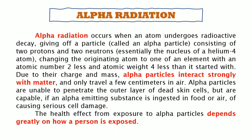What is alpha radiation? Alpha radiation occurs when an atom undergoes radioactive decay, giving off a particle consisting of two protons and two neutrons, changing the originating atom to one of an element with an atomic number 2 less and atomic weight 4 less than it started with. Due to their charge and mass, alpha particles interact strongly with matter and only travel a few centimeters in air. Alpha particles are unable to penetrate the outer layer of dead skin cells, but are capable, if an alpha-emitting substance is ingested in food or air, of causing serious cell damage. The health effect from exposure to alpha particles depends greatly on how a person is exposed.